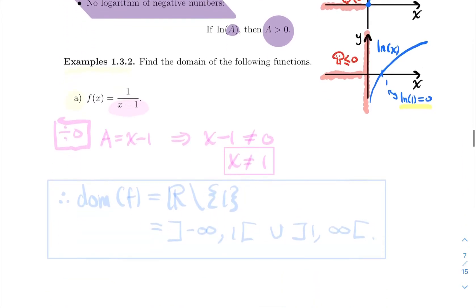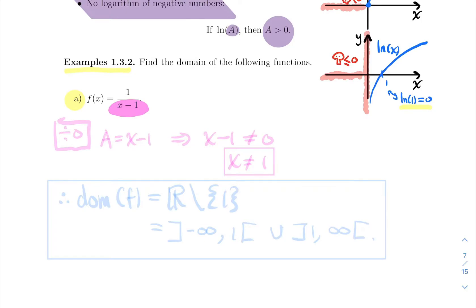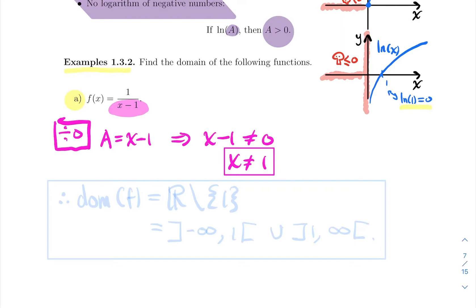Let's do some examples and compute the domain of some functions. The first one: f(x) = 1/(x−1). The only potential problem here is division by zero. We have x−1 in the denominator, so we need x−1 to not equal zero, which means x cannot equal one. The only value that makes this function crash is x = 1, so one is not part of the domain.